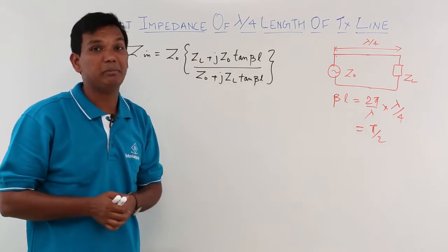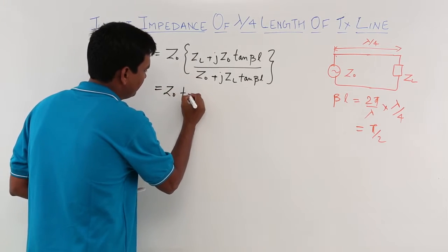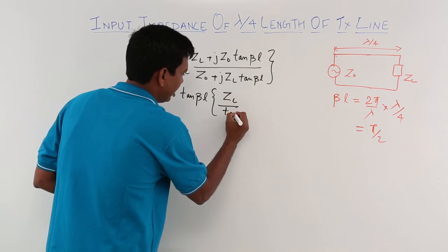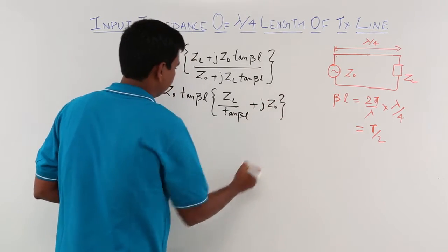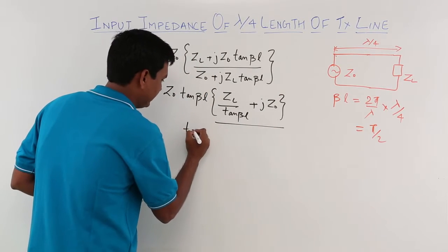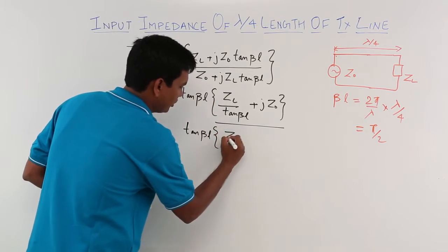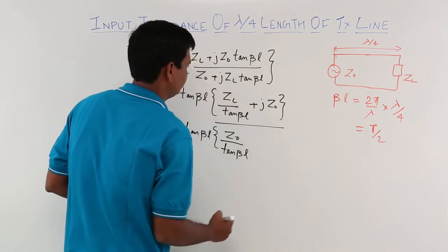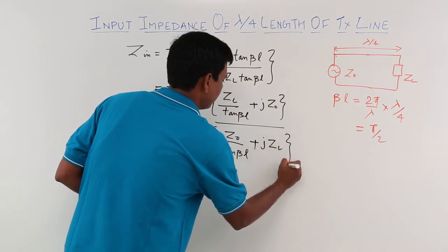What I will do is take tan beta l common. Let us take z0 tan beta l common. This becomes zl by tan beta l plus jz0. This will become z0 by tan beta l plus jzl.